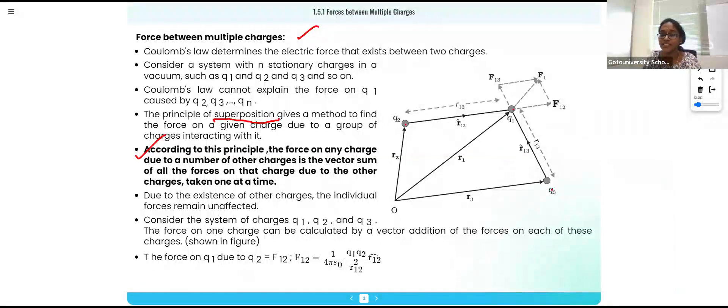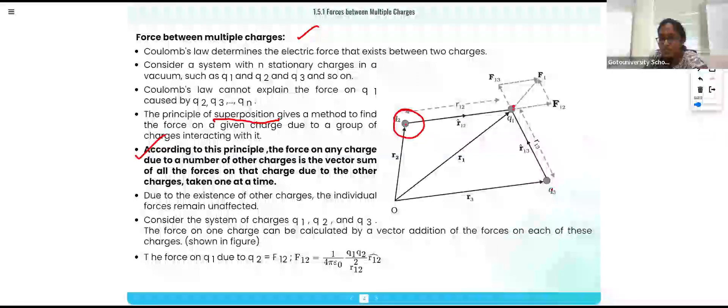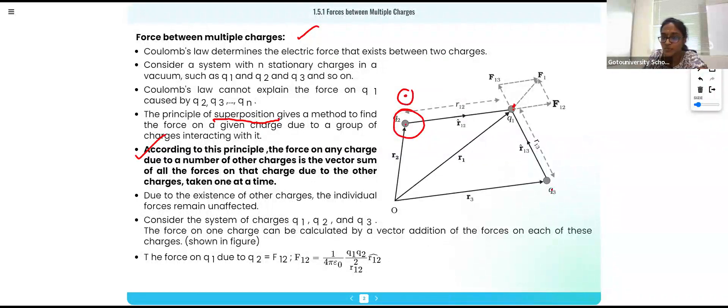So the force on any charge due to number of other charges is a vector sum of all other forces on that charge due to other charges. So like if there is a charge Q2, because of Q1 definitely there will be some force right.